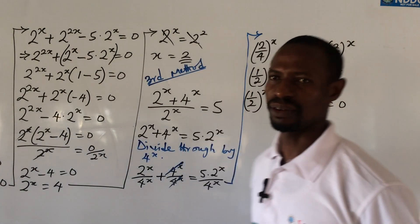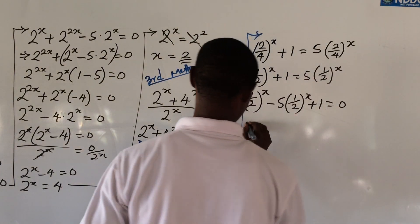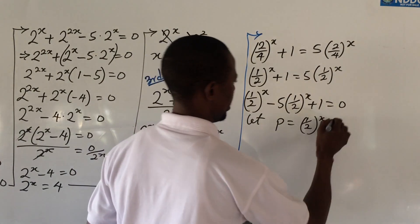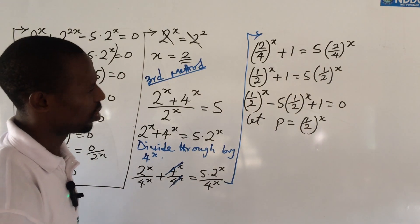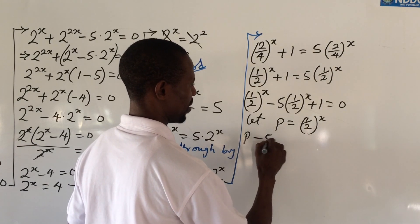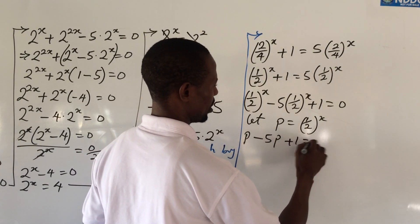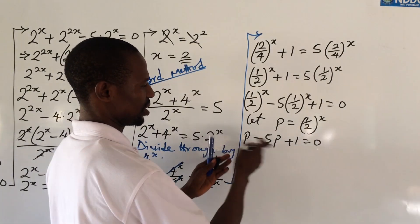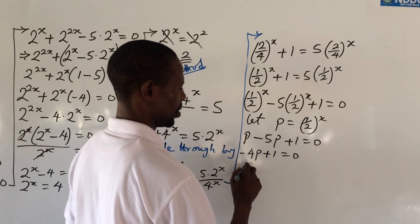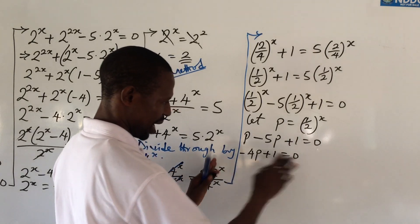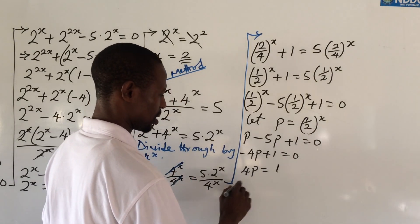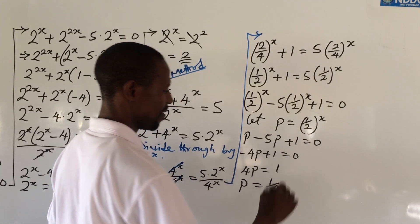At this point we introduce a substitution. Let p = (1/2)^x, equivalently 1 / 2^x. Substituting, we get p − 5p + 1 = 0, which simplifies to −4p + 1 = 0. Rearranging: 4p = 1, so p = 1/4.